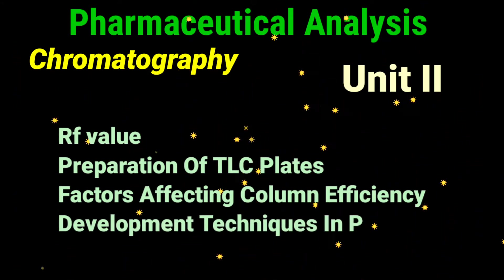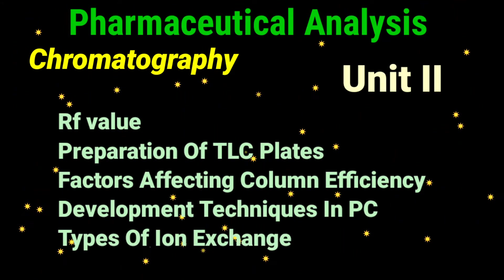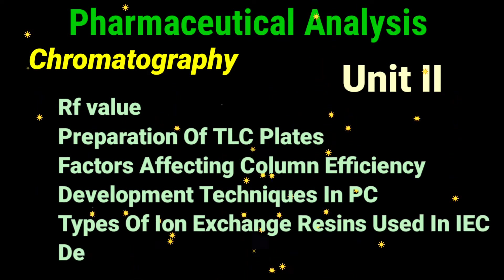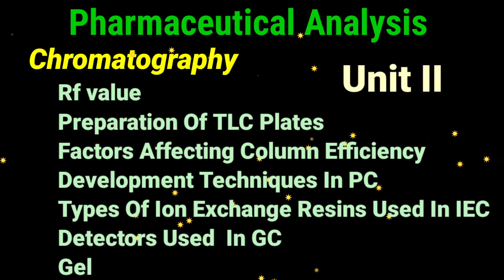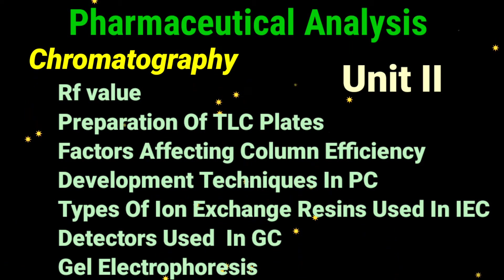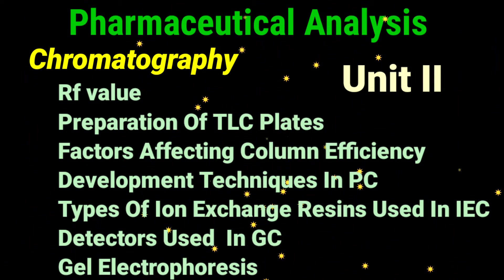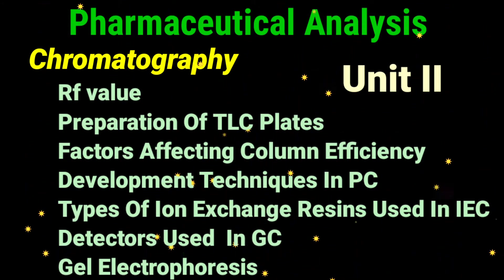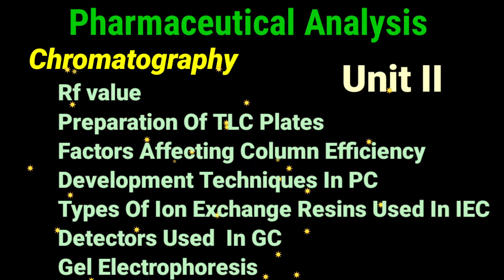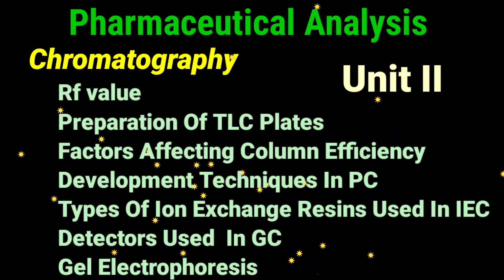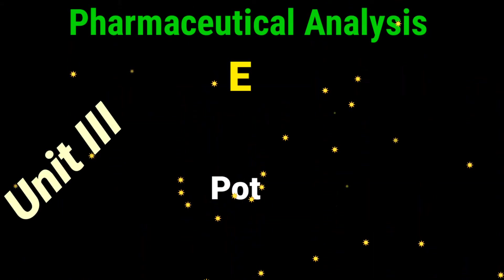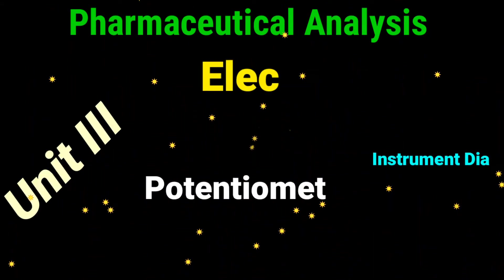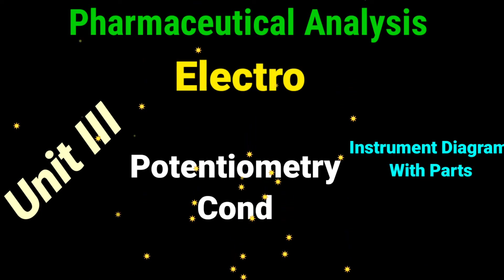Further important subtopics in Unit 2 include different development techniques in paper chromatography, different types of ion exchange resins used in ion exchange chromatography, different types of detectors used in gas chromatography, and in electrophoresis — paper electrophoresis as well as gel electrophoresis. Any one type will be important in this topic.